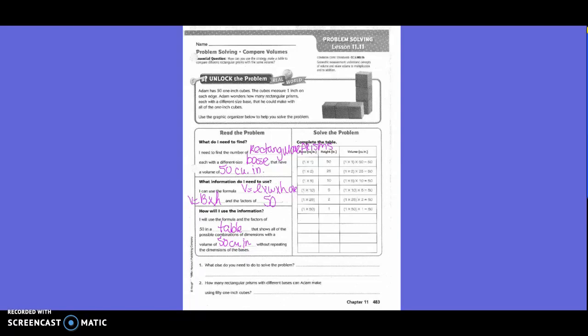That shows all of the possible combinations of dimensions with a volume of 50 cubic inches. Over here they said if my height was 25, I could have a base of 1 times 2. They said I could also have a base of 1 times 5 with a height of 10. They also said I could have a base of 1 and 10 and a height of 5, or 1 times 25 times 2, or 1 times 50 times 1. So those are all the 1's. What could be another factor I could have? Could I have a 2 in there?